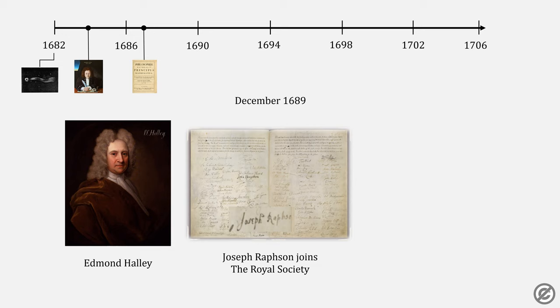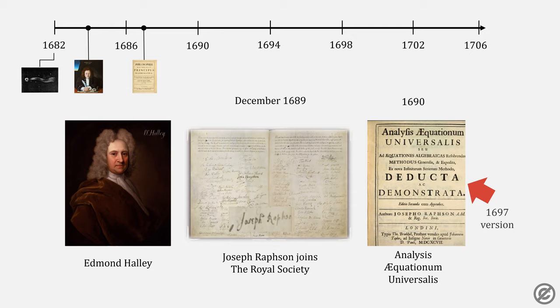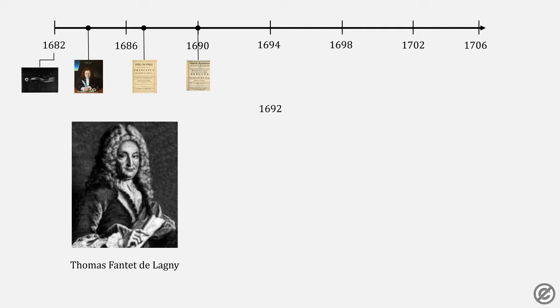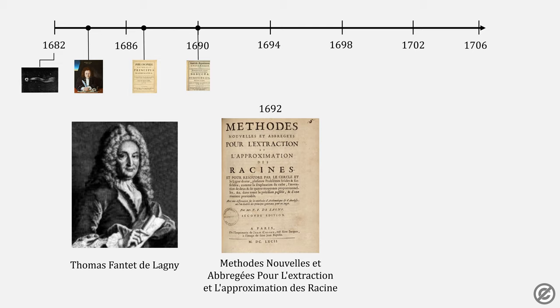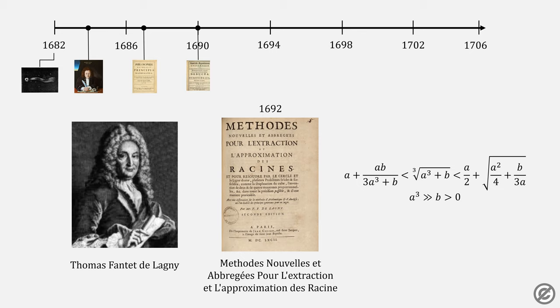Two years later, Halley nominated Joseph Rapson to join the Royal Society. This is his signature in the charter. Rapson is best known from the Newton-Rapson method, originally published in this book. Then in 1692, a French mathematician named Delanyi created this new method for finding cube roots, which intrigued Halley.